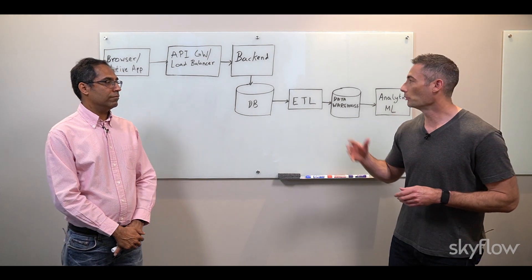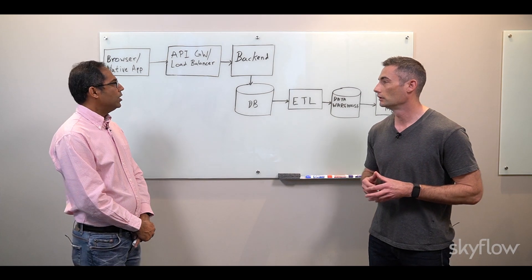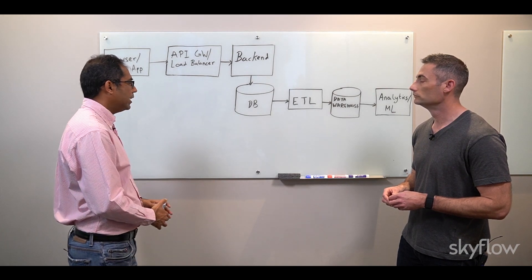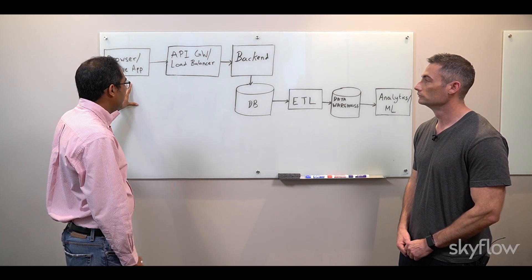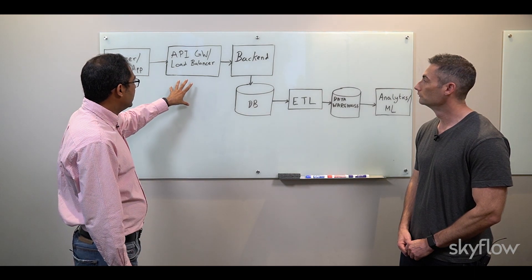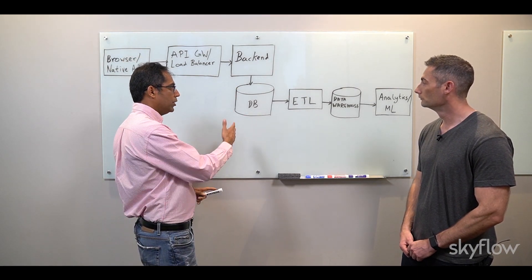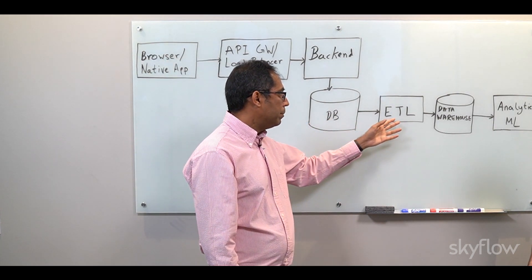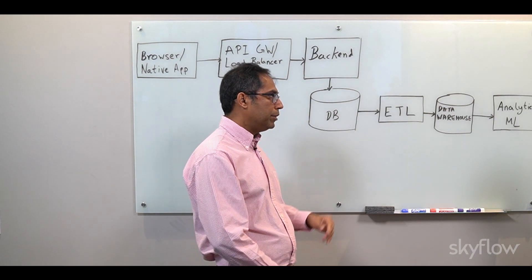So Manish, starting with the challenges, do you mind walking us through some of the problems that companies face when it comes to actually securing their customer data? Sure, so let's start with a very simplified architecture diagram for pretty much any tech company. You're probably collecting some sensitive user information from a browser app or a native app, sending it through some middleware components like API Gateway, Load Balancer, to your backend for processing and storage, and then you've got other processes that pick it up from your main database through an ETL pipeline to store it in your data warehouse for your dashboards, your business analytics, machine learning.